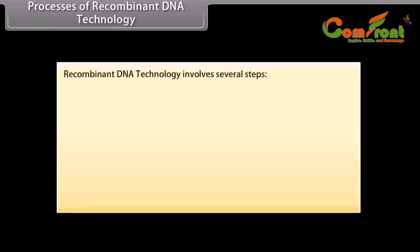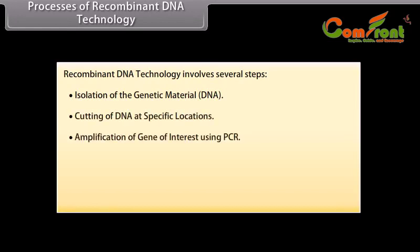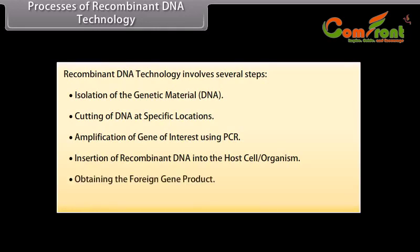Processes of recombinant DNA technology. Recombinant DNA technology involves several steps: isolation of the genetic material (DNA), cutting of DNA at specific locations, amplification of the gene of interest using PCR, insertion of recombinant DNA into the host cell organism, obtaining the foreign gene product, and downstream processing.